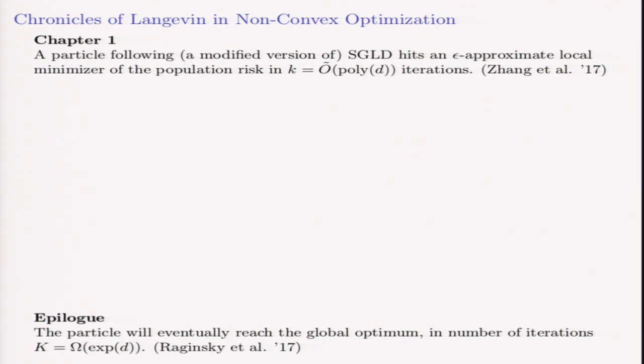I'll briefly recap what we know so far about vanilla Langevin on non-convex objective functions. We have a local view and a global view. Last year, Zhang et al. showed that the Langevin algorithm will hit an epsilon-approximate local minimum of the population risk in time polynomial in all parameters.